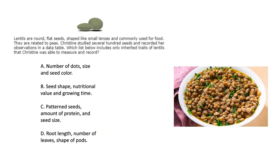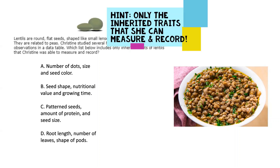Lentils are round, flat seeds shaped like a small lens and commonly used for food. They are related to peas. Christine studied several hundred seeds and recorded her observations in a data table. Which list below includes only inherited traits of lentils that Christine was able to measure and record? A, number of dots, size, and seed color; B, seed shape, nutritional value, and growing time; C, pattern seeds, amount of protein, and seed size; or D, root length, number of leaves, and shape of pods? I'll give you just a moment to think about that and we'll be right back.